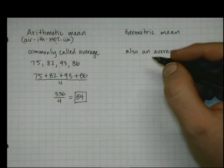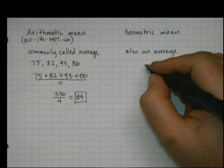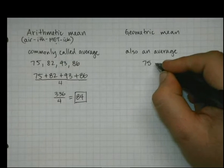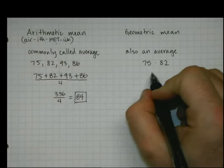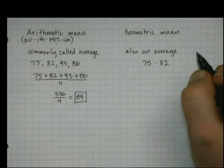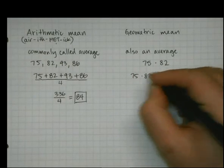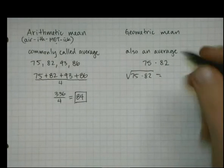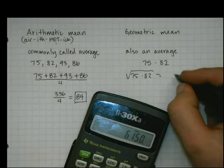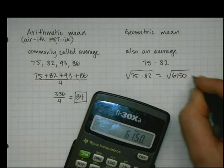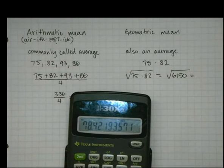Just a quick example, if I wanted to find the geometric mean of two numbers, let's say 75 and 82, well the way I find that is I multiply the two numbers, and then I square root them. 75 times 82, again, don't be a hero, use a calculator. 75 times 82, 6,150. The geometric mean is the square root of that. I got 78.42-ish.